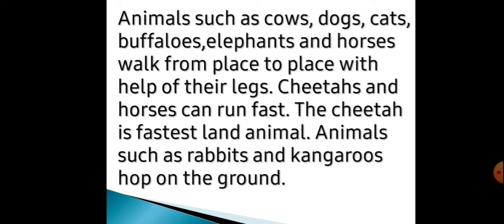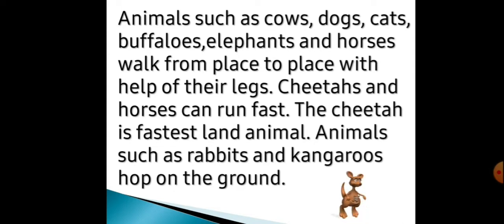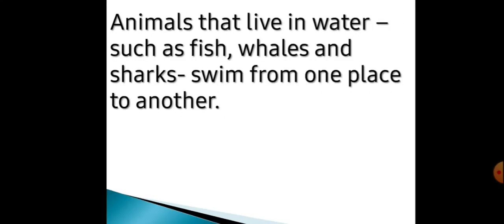Animals such as rabbits and kangaroos hop on the ground. Jo animals mein kangaroo aur rabbits hain, woh ground mein hop karte hain, matlab jump karke chalte hain. Animals that live in water such as fish, whale and shark swim from one place to another. Jo fish, shark, dolphin hain, woh sab ek jagah se doosri jagah jaane ke liye swim karke jaayenge.